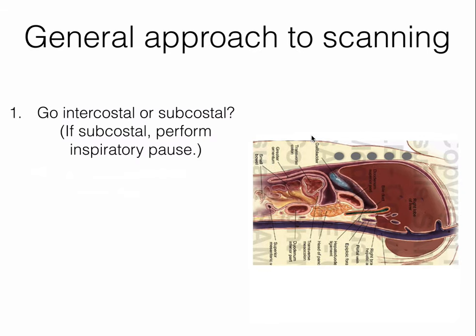There are two basic approaches to finding the gallbladder. You can place the probe underneath the costal margin for a subcostal approach, which allows you to perform a sonographic Murphy sign — more reliable than the physical exam equivalent — but the major disadvantage is dealing with bowel gas. To minimize bowel gas, have the patient take a deep breath and hold it; this inspiratory pause shifts the diaphragm, liver, and gallbladder inferiorly for better visualization. The second approach is to place the probe in an intercostal space, using the liver as your acoustic window — a smaller footprint phased array probe is recommended — but the disadvantage is you cannot perform the sonographic Murphy's sign.